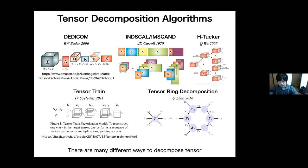CP and Tucker are both well-studied algorithms. There are many different ways to decompose tensor such as dedecone, inscope, each Tucker, tensor train, and tensor ring decomposition.